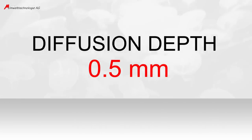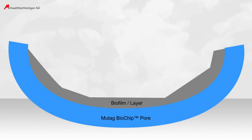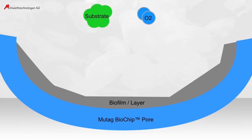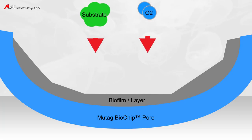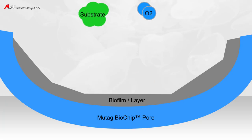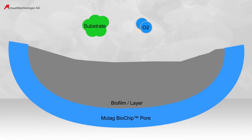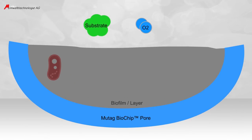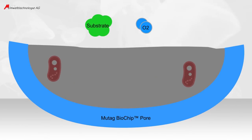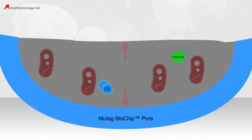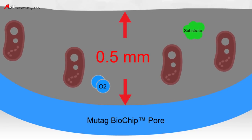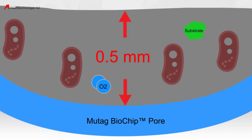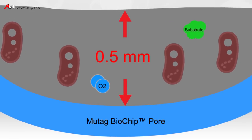Up to this scale, the supply of active biofilms down to the deepest layers is ensured. The diffusion of 0.5 mm is hence the supply channel through the biomass. The deepest biofilms are situated in a layer thickness up to 0.5 mm.